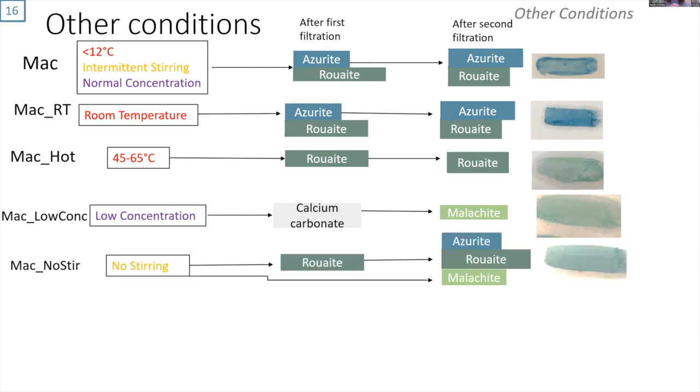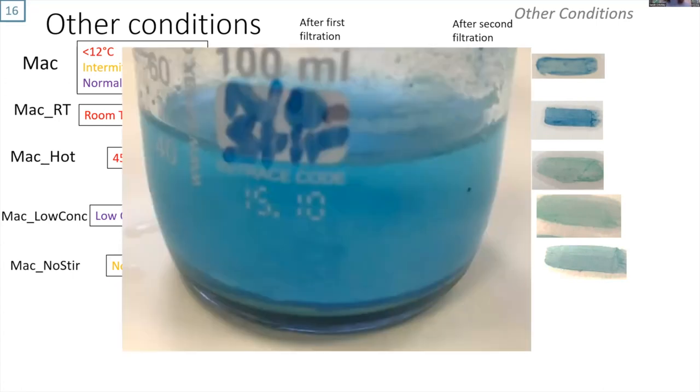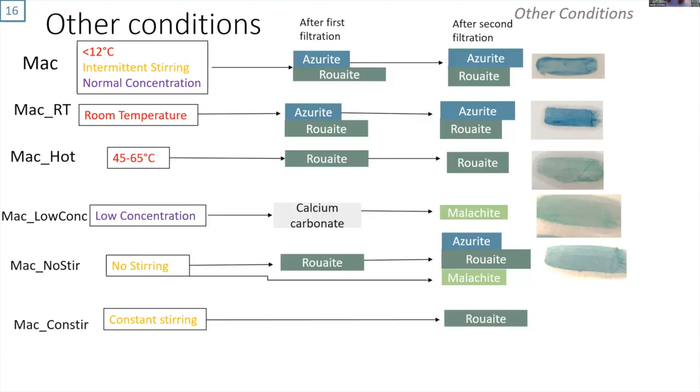Then altering the stirring. When we didn't stir the reaction at all, to begin with, we only got ruite, but then after quite a long period, we got some azurite and malachite nucleating. From this image of the flask, you can see a distinct blue layer at the bottom where the pure azurite is forming. So it was in quite a heterogeneous way. With constant stirring, only ruite formed again.